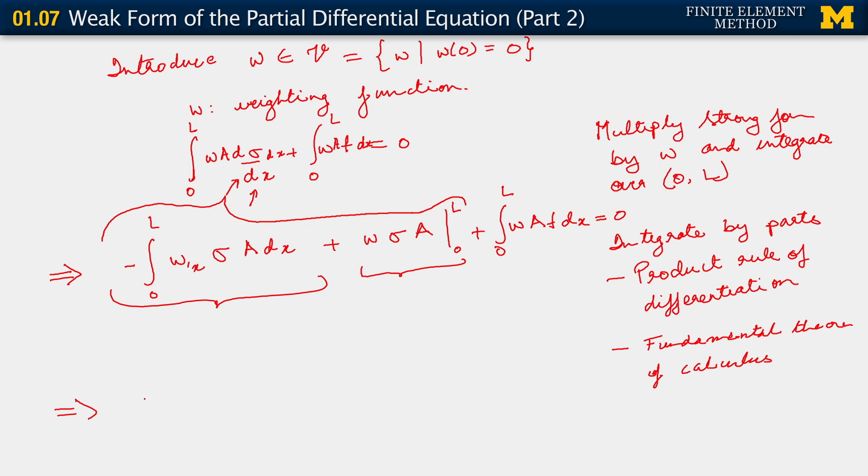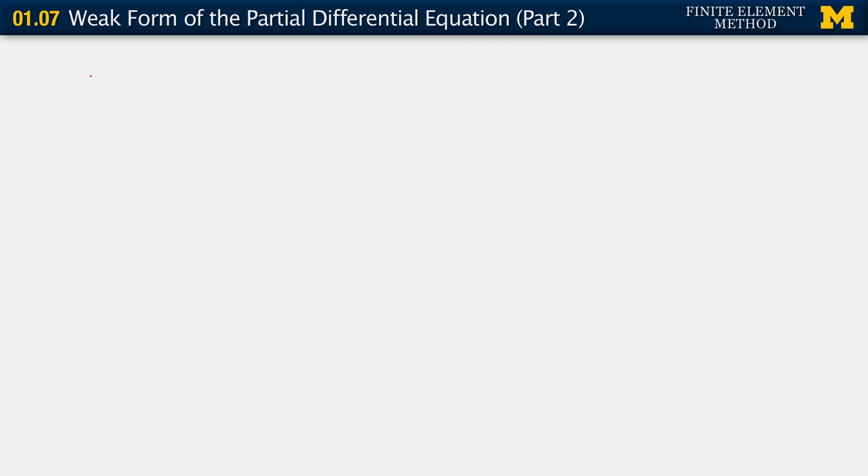All right, but then let me write the other side of the equation first. So effectively what I'm getting here is the following: I get integral 0 to L w comma x sigma A dx equals integral 0 to L w f A dx plus w sigma A at 0 and L. All right, let me go to the next slide and simplify it.